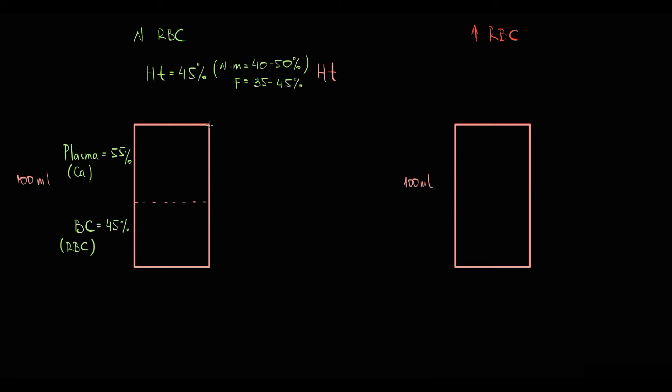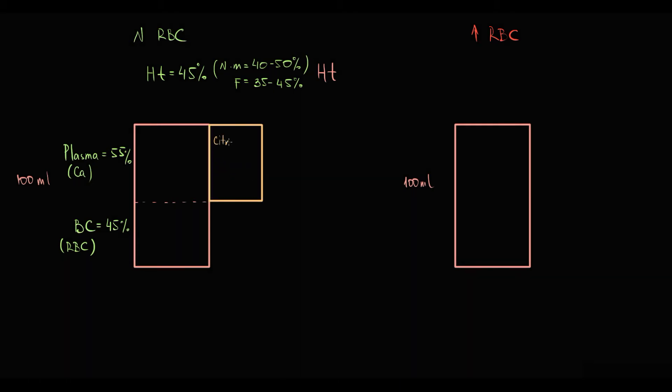Thereby to neutralize calcium in plasma volume, and in our case plasma volume compartment is 55 ml, we add standard volume of citrate. Then in the laboratory we add standard volume of calcium, and we get normal prothrombin time and activated partial thromboplastin time.